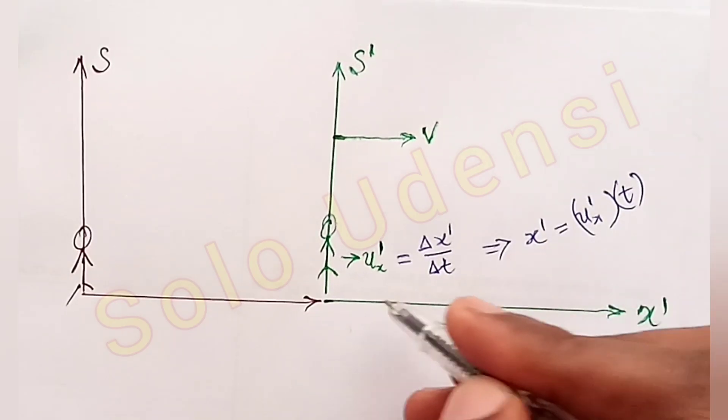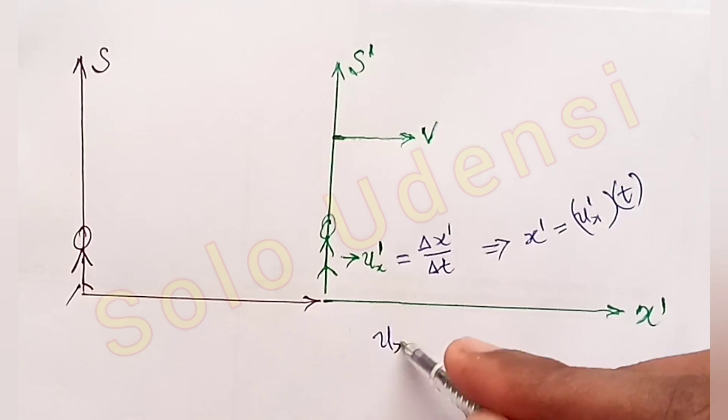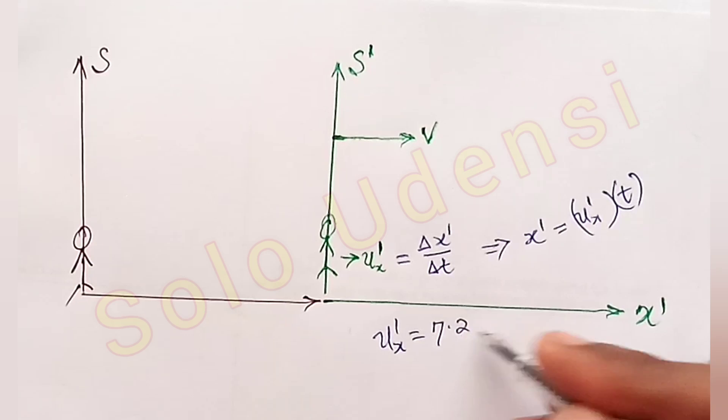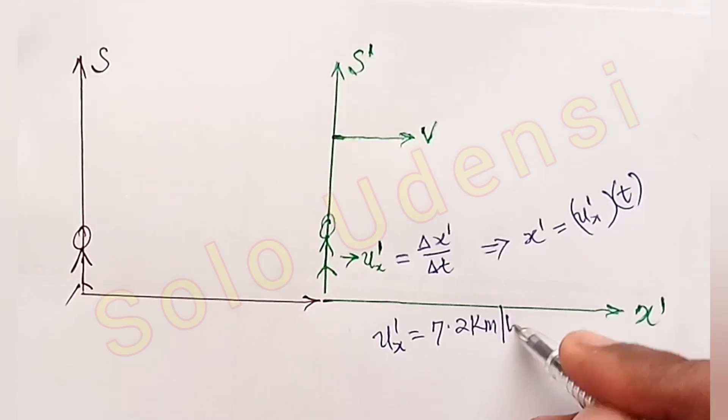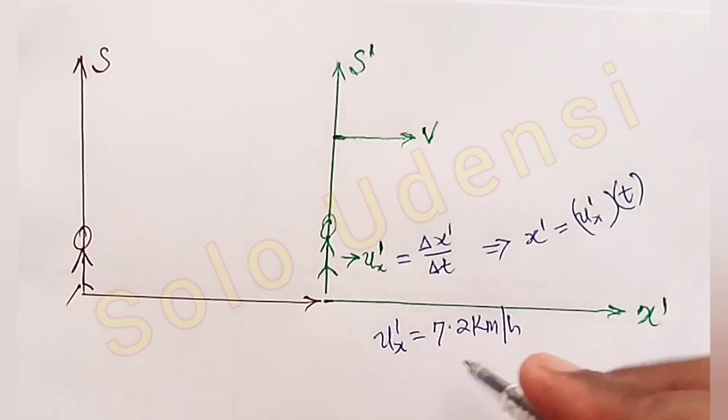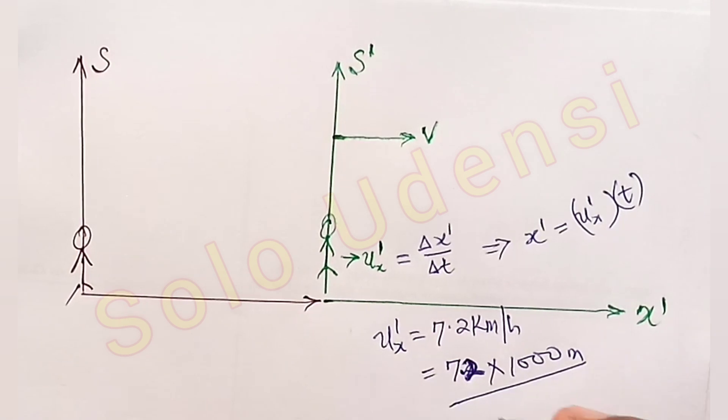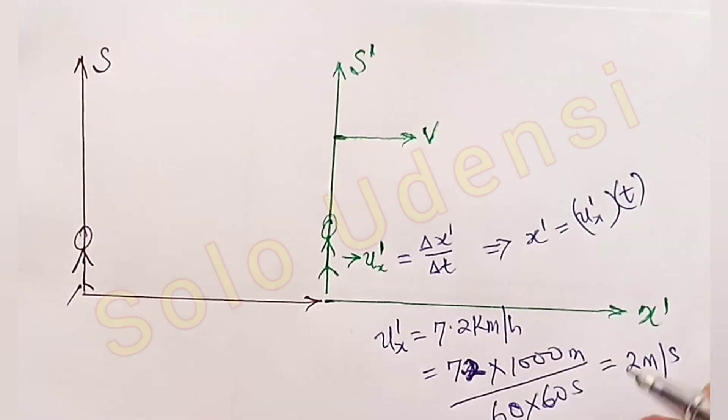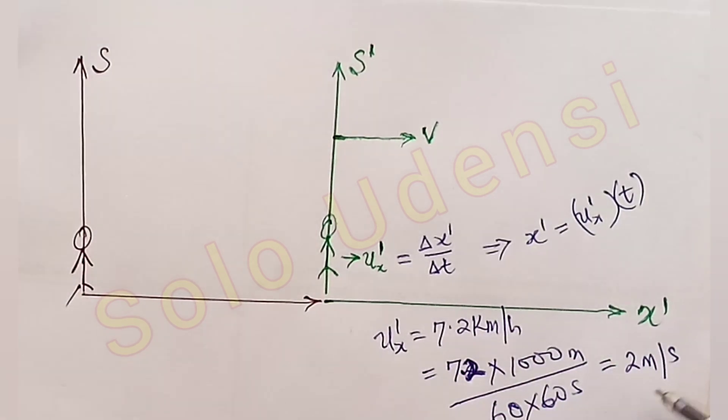They say that the bus is moving with Ux' equal to 7.2 km per hour. 7.2 km per hour is equal to 7.2 times 1,000 meters all over 60 times 60 seconds. That will give us 2 meters per second. So the observer in the bus is moving with 2 meters per second.